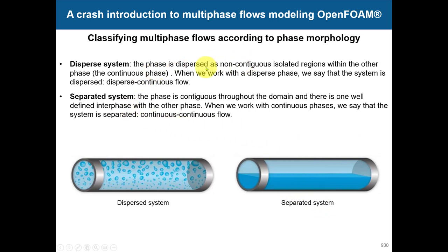In a dispersed system, you have a dispersed phase — a phase that is dispersed within a continuous phase, and this is tricky. You start to have droplets, bubbles, and similar structures. As you want to resolve those droplets and bubbles, which can be in the size of microns, you can imagine that you need a very fine mesh. That's where the modeling part enters.